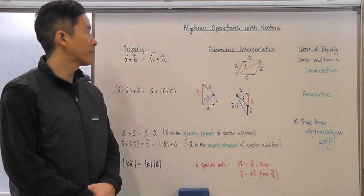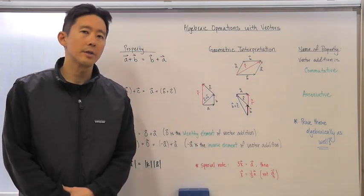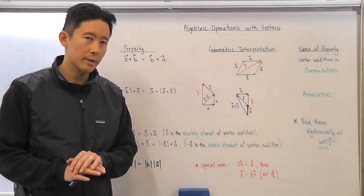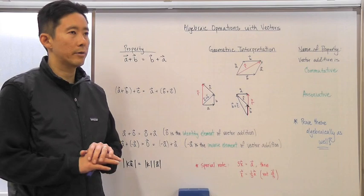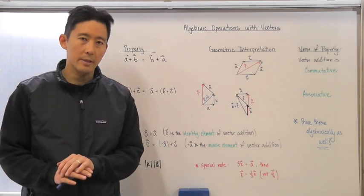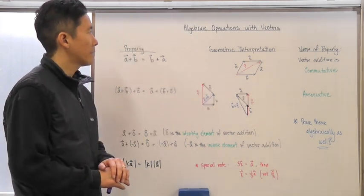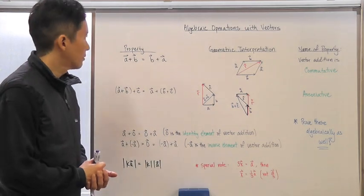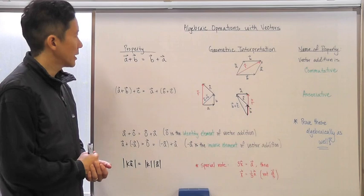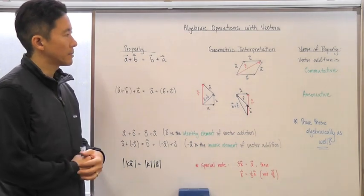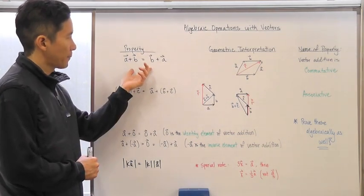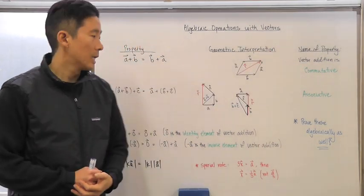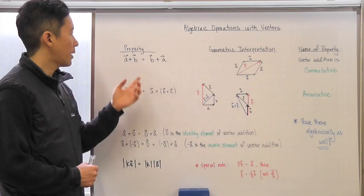Hello everyone, let's go ahead and start off with algebraic operations with vectors. Now that we have a pretty good understanding of how two-dimensional and three-dimensional vectors can be created and represented, we will want to think about the algebraic operations we can use with those vectors. We'll start off with the properties themselves: the algebraic property, the geometric interpretation, and the name of that property.